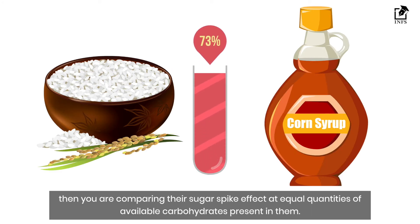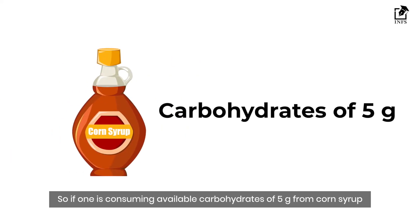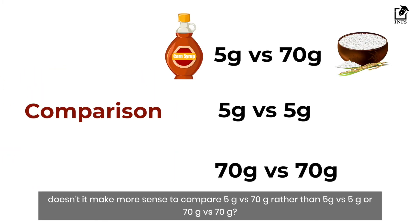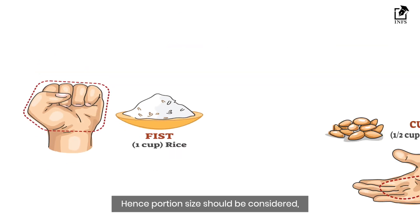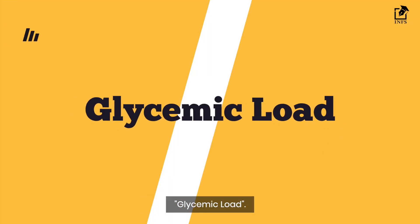But in a general diet, you might consume a small quantity of corn syrup and quite a lot of rice. If someone is consuming 5 grams of available carbohydrates from corn syrup and 70 grams from rice, doesn't it make more sense to compare 5 grams versus 70 grams rather than equal quantities? Hence portion size should be considered, which brings us to the topic of glycemic load.